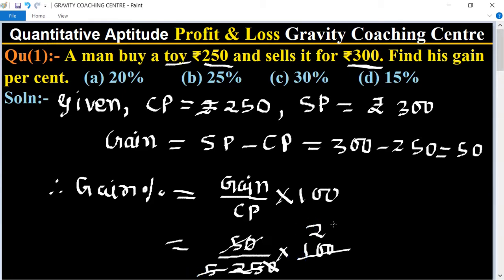So 20 percent is the profit gain percent. Therefore, option A is the correct answer.